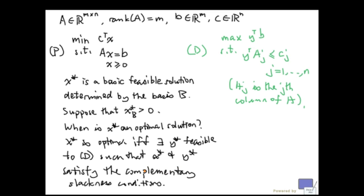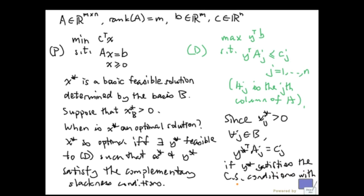Now the complementary slackness conditions applied to x star and y star will tell us that the constraints in the dual corresponding to the basic variables will have to hold with equality at y star. Because each basic variable is non-zero. So the corresponding constraint has to be satisfied with equality. So since xj star is bigger than zero for all j in b, y star transpose aj must be equal to cj if y star satisfies the CS conditions with x star.